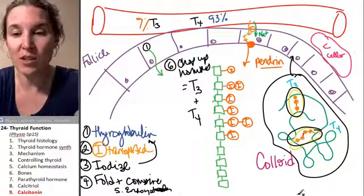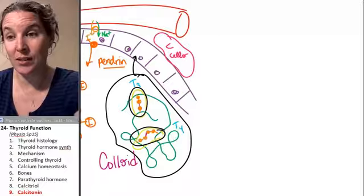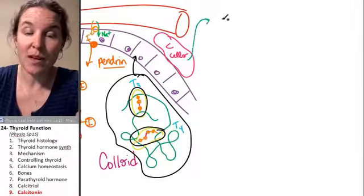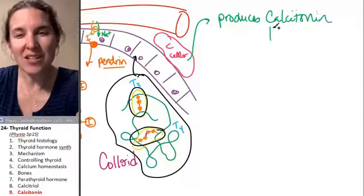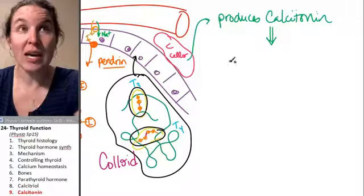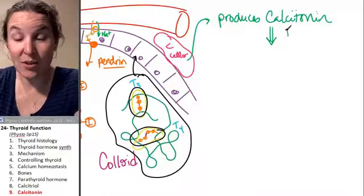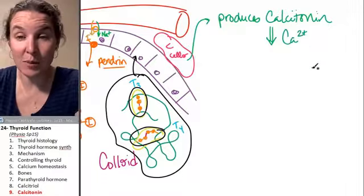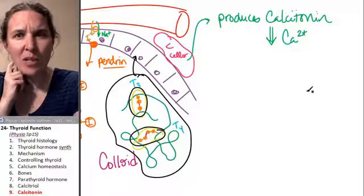C-cells produce calcitonin. So let's take a second to go, what does calcitonin do? It produces calcitonin. And calcitonin is the only one that's going to act to decrease calcium concentration in the blood. So how is it going to decrease calcium concentration in the blood?